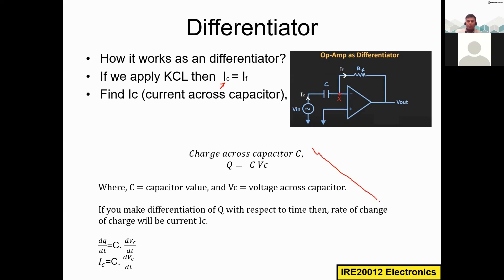The charge stored in the capacitor is Q, which equals C times Vc, where C is the capacitor value and Vc is the voltage drop across the capacitor. Differentiating Q with respect to time t gives dQ/dt = C × dVc/dt. This is the equation for ic: ic = C × dVc/dt.